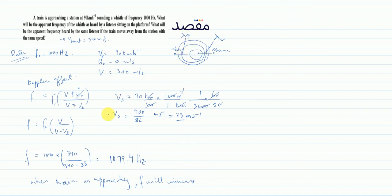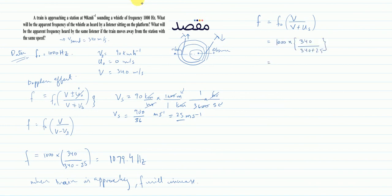In the next part, we use the second formula: f = f₀ × v / (v + vs). The value of vs is already known as 25 m/s, so we directly put the values: 340 divided by (340 + 25). This factor in the bracket becomes less than 1, so the apparent frequency will decrease.